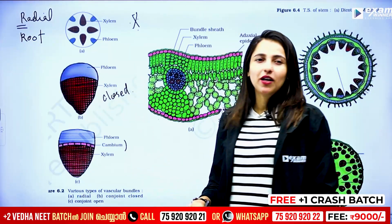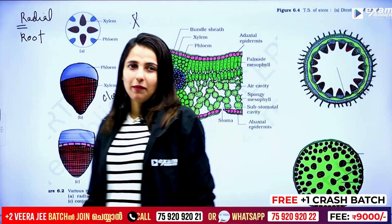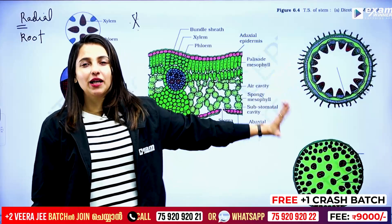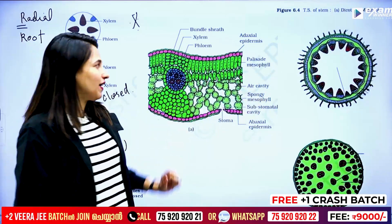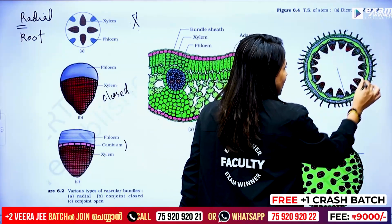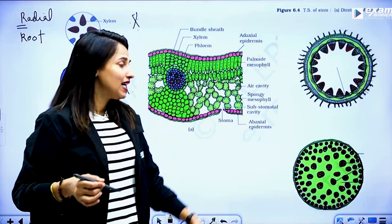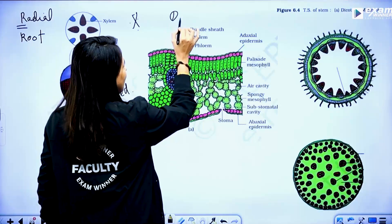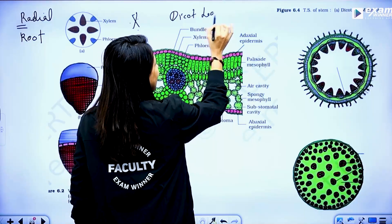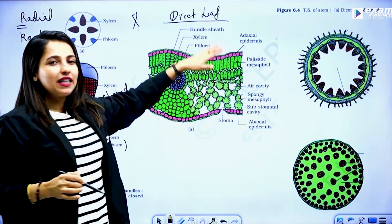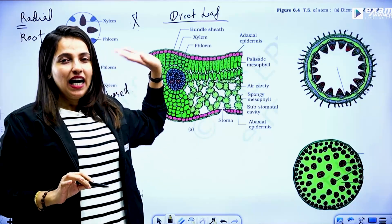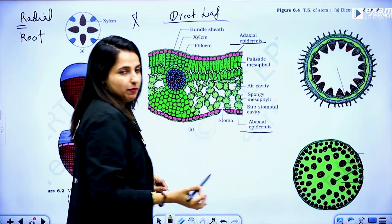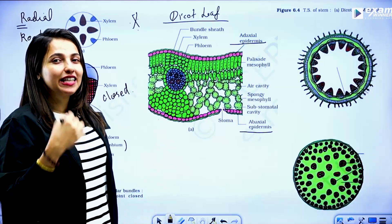This is cambium. This is open vascular. Dicot and monocot stem — this is a ring arrangement, it is dicot stem. This is monocot stem. Now we have dicot leaf. This is dicot leaf. This is the upper epidermis, lower epidermis, adaxial and abaxial.